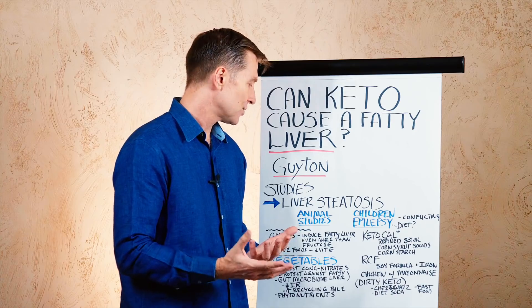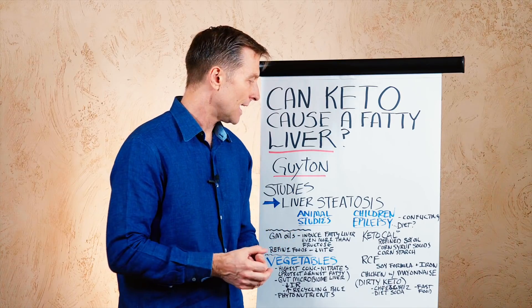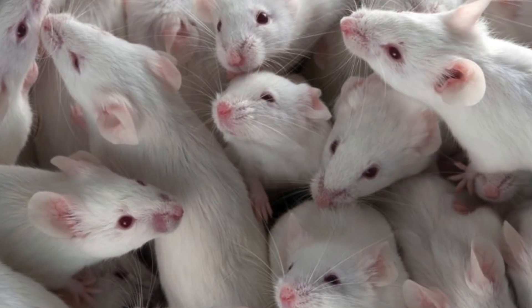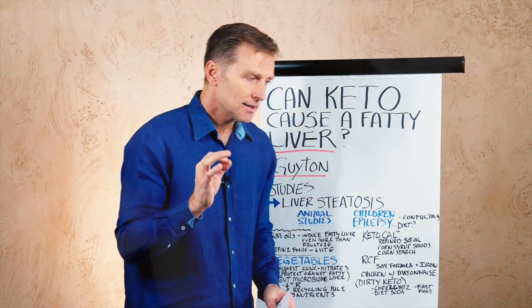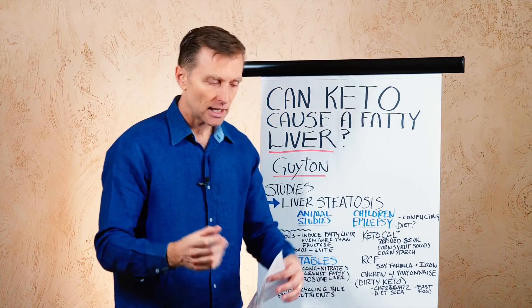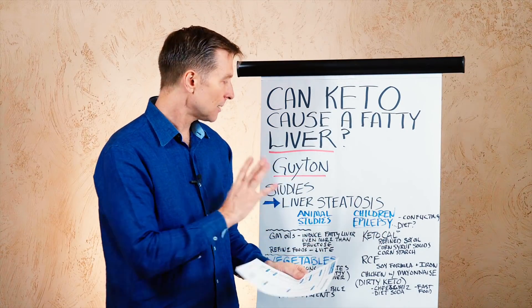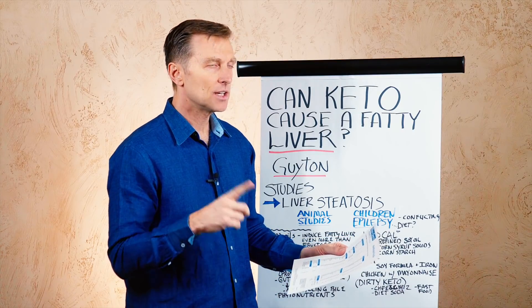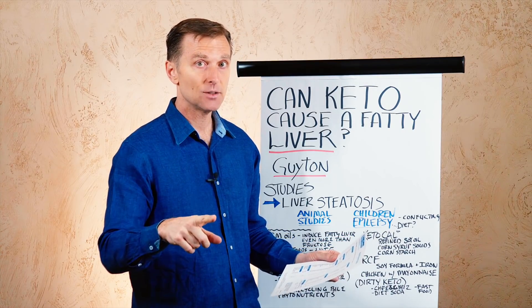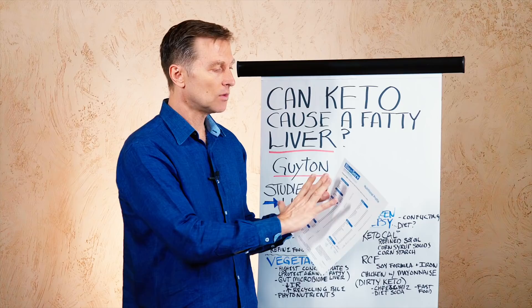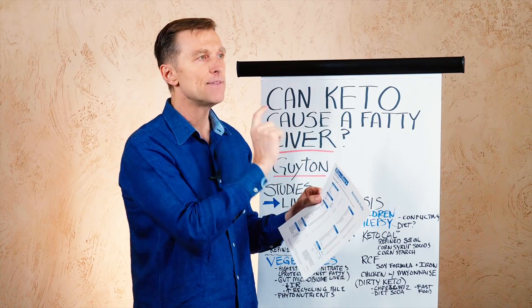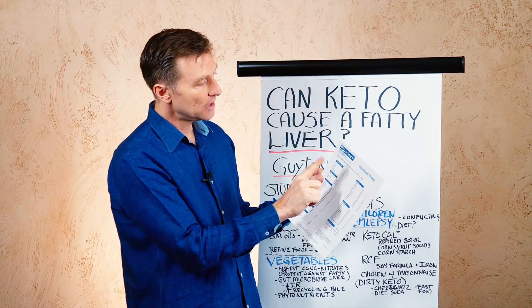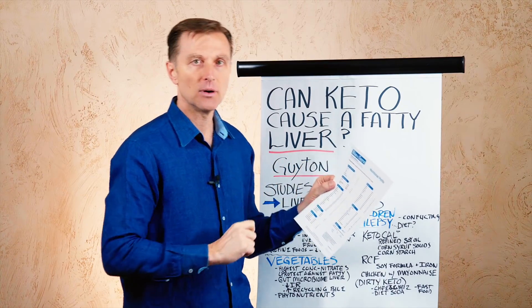You're going to see a combination of animal studies and studies on children with epilepsy. When you actually read the animal studies, you're going to see a link between the ketogenic diet and developing a fatty liver. But with the animal studies, you have to question what diet they put them on. I've done other videos on a high fat diet — with the animal chow they fed them, a high fat diet is really a high fat plus high sugar diet. But they also have a ketogenic diet for mice, and I want to show you what they are giving these mice.